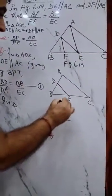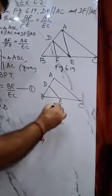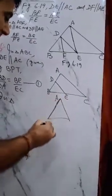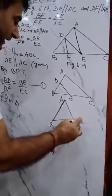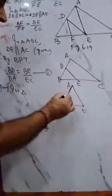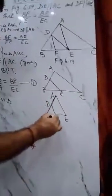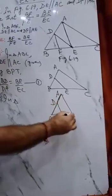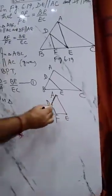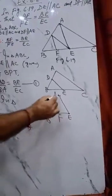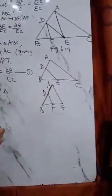So we take triangle ABE in which DF is parallel to AE.